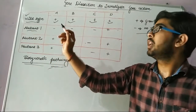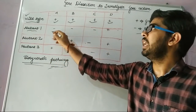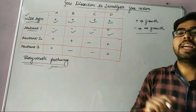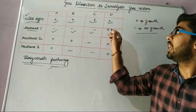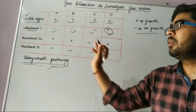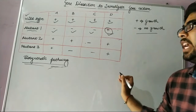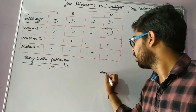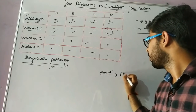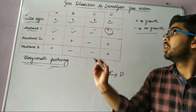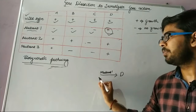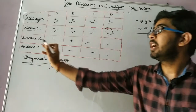In mutant 1, growth is not found in A, B, or C containing media, but it is found in D containing media. The compound in which growth is found — D — is located after mutant 1 in the pathway, as explained earlier. Therefore, compounds A, B, and C are all found just prior to mutant 1.